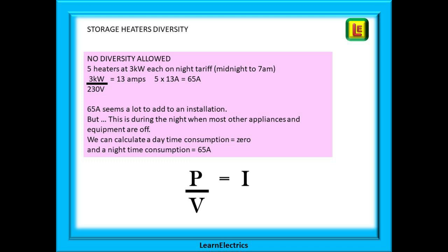If storage heaters were installed, we would allow no diversity. So let's say 5 heaters at 3 kilowatts each. 3 kilowatts divided by 230 volts gives 13 amps each, and 5 times 13 is 65 amps. But remember, they're only enabled during the night, say from midnight to 7 a.m., when most other equipment is turned off. We can therefore calculate the daytime current as 0 amps and the nighttime current as 65 amps, and this will be important later when working out overall demand.